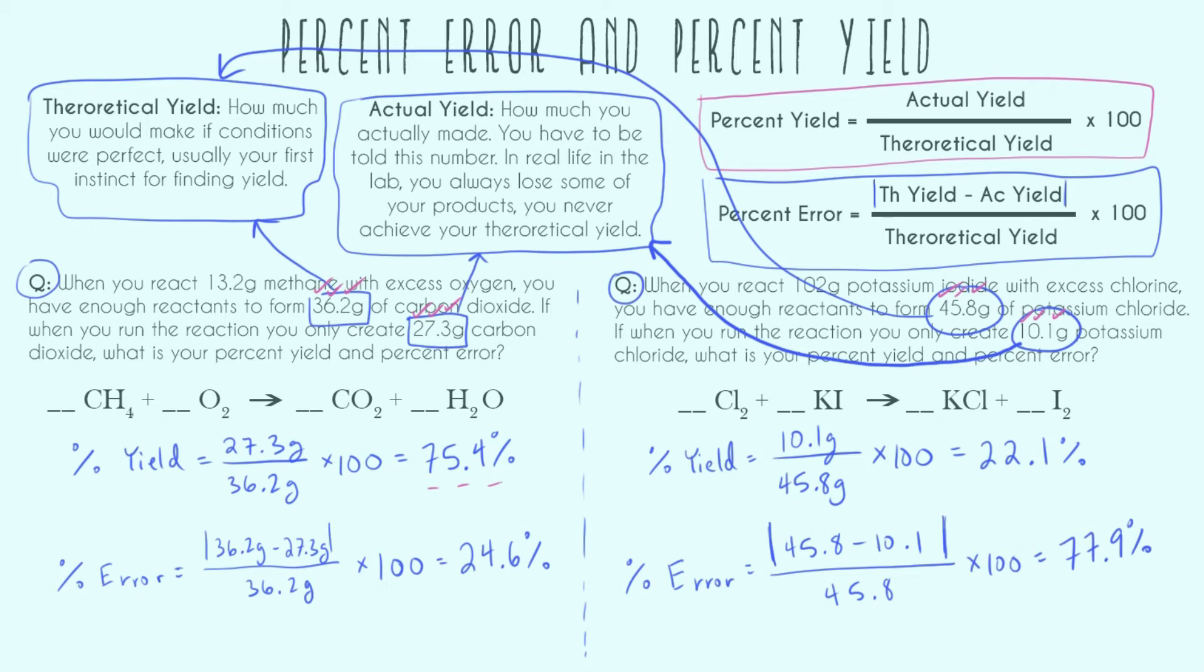All right, I hope this video helped you understand percent error and percent yield a little bit better. So remember, they're just formulas. All you have to do is get your actual and theoretical yield, and then you can go ahead and plug in. And I also have a video that covers a ton of stoichiometry stuff if you need to review the other concepts in this topic as well. All right, happy studying.